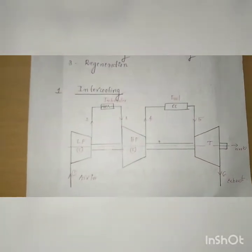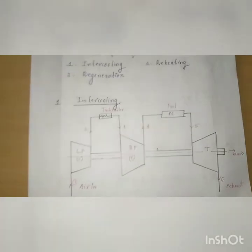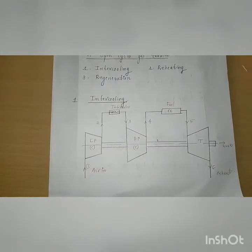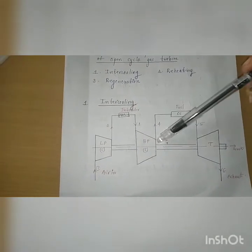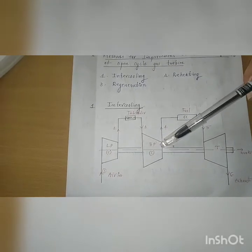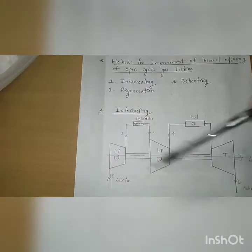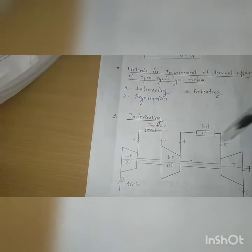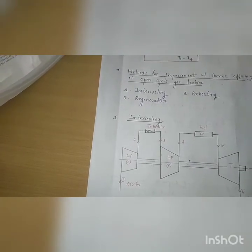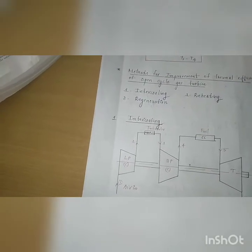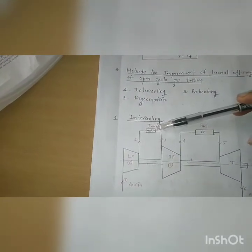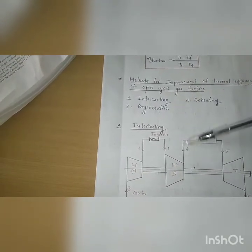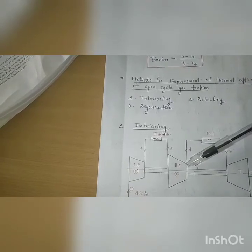If we are increasing the number of stages of the compressor — a low pressure compressor and a high pressure compressor — by means of an intercooler, the work utilized by the compressor can be reduced. When using a single stage compressor, due to high pressure and high temperature, it cannot develop maximum work or maximum pressure. By using an intercooler, we can reduce the temperature, allowing it to produce maximum work.